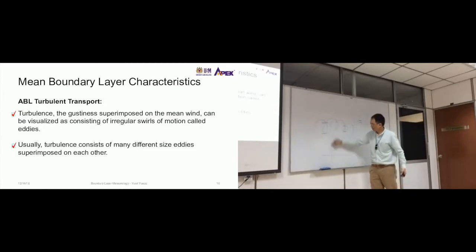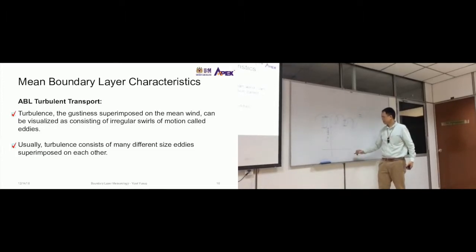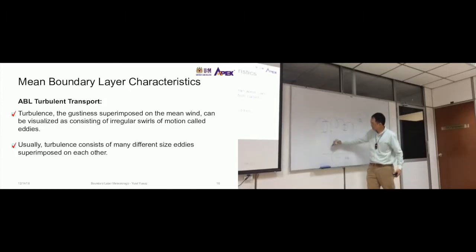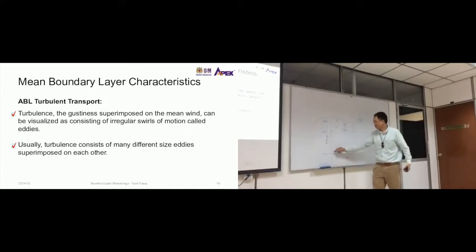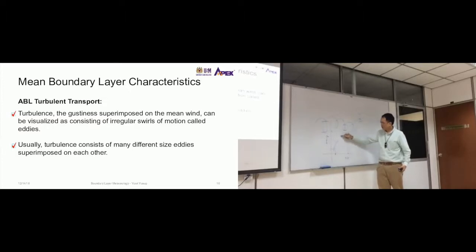If you put it into a graph with eddy size on one axis and energy inside the eddy on the other, it will look like a spectrum. Small eddies have a certain amount of energy, larger eddies have more, and so on — it's a range of eddy sizes each carrying different amounts of energy.